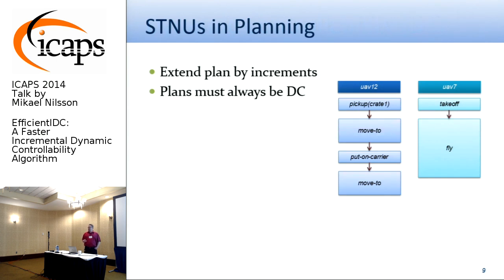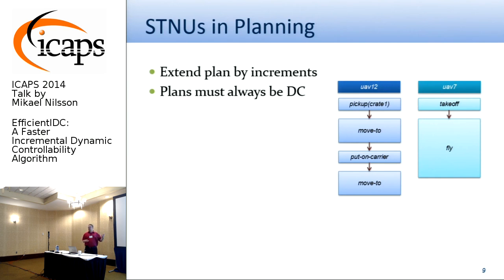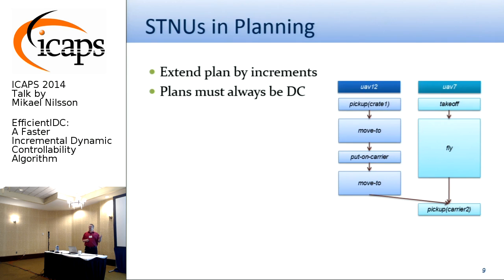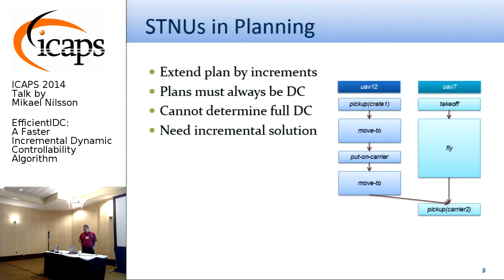In my department we do planning, and that's the reason for working with STNUs. The planner builds an STNU alongside while making its plan. Since it's a forward-chaining planner, it incrementally builds this STNU by adding actions — typically a node or one or more constraints per step. If a plan becomes non-dynamically-controllable, you can never restore dynamic controllability by adding more constraints, so we need to backtrack directly. To do this efficiently, we need an incremental solution that can verify over time that the network stays dynamically controllable.